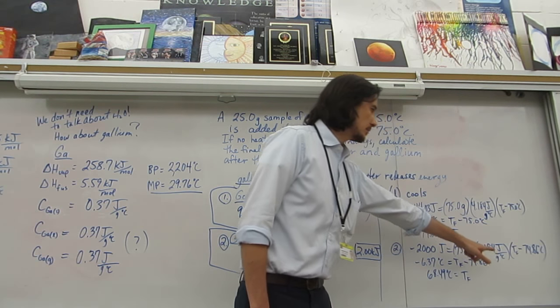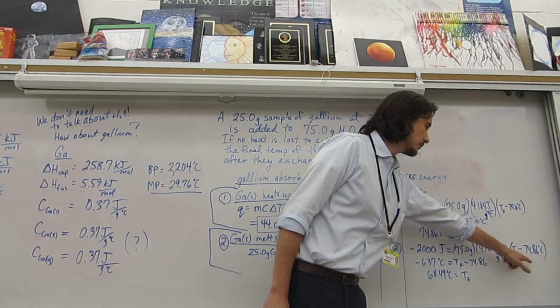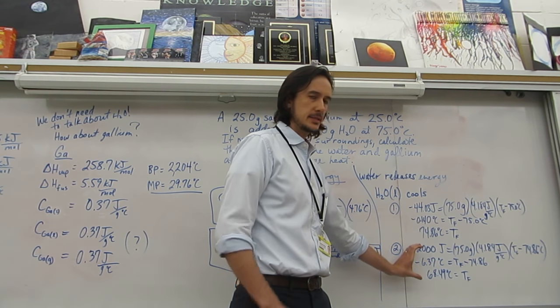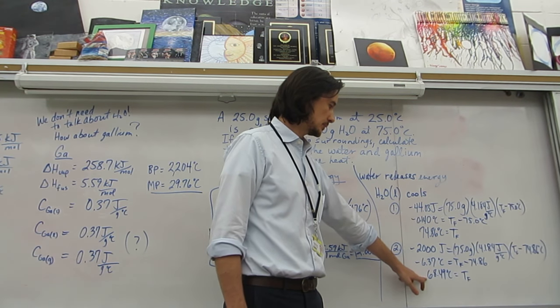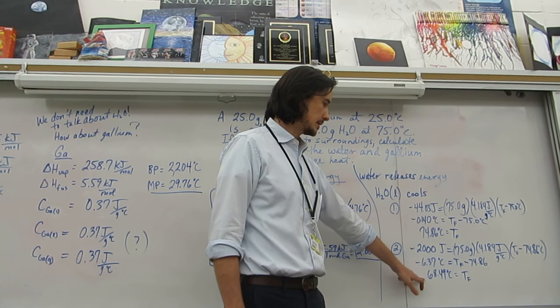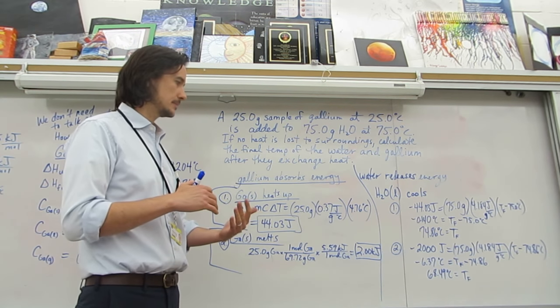Set it equal, and notice the T_f minus the initial temperature I put there is the 74.86 because we're looking at this as a separate step, and we get a new final temperature of 68.49 degrees Celsius. So this is after melting all of the gallium.